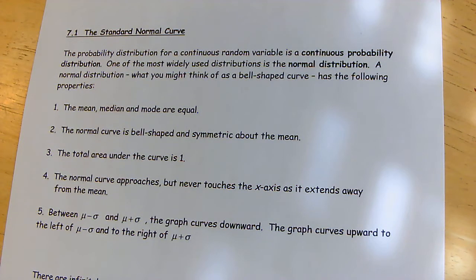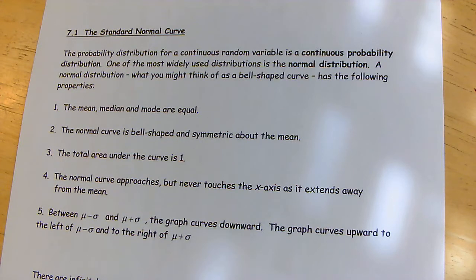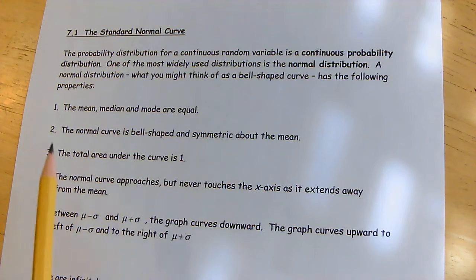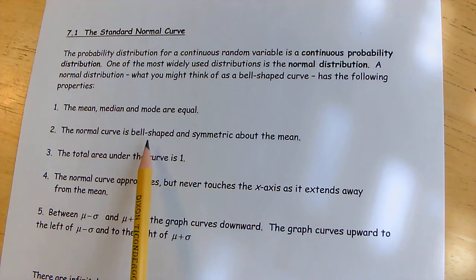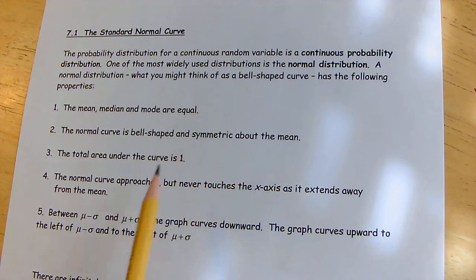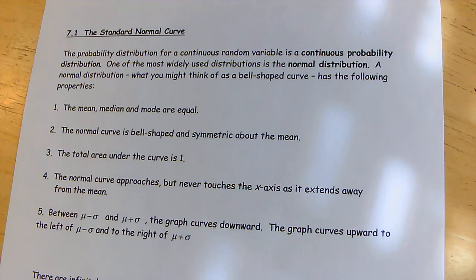Section 7.1 introduces the standard normal curve, which is a probability distribution for continuous variables. It's the most widely used continuous probability distribution, with a bell-shaped curve where the mean, median, and mode are equal and located in the middle. The distribution is symmetric around the mean, and the total area under the curve equals one because it is a probability distribution.